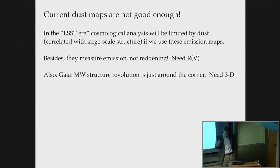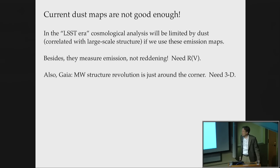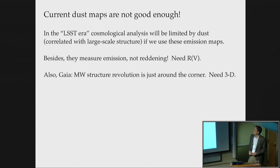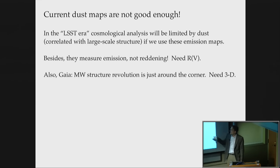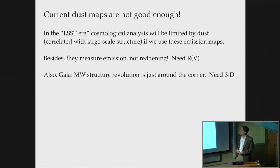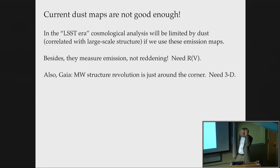In the LSST era — the Large Synoptic Survey Telescope, an 8-meter telescope in Chile with a 3-billion-pixel camera that can scan the whole available sky every three nights — many things we want to do will be limited by our knowledge of dust. The maps we have now, even the Planck maps, are not good enough. Partly they're measuring emission, not reddening; we actually want to know the reddening and need the Rv parameter. Even though it's a boring detail, it's critical to making this all work.